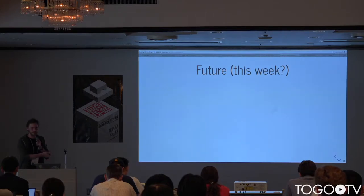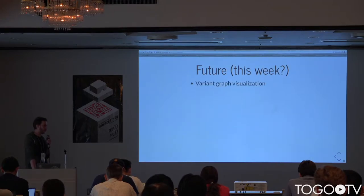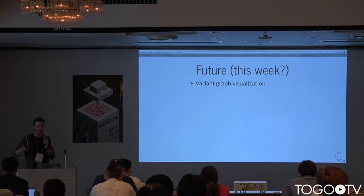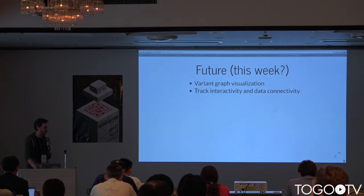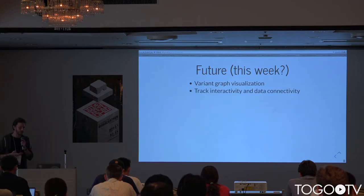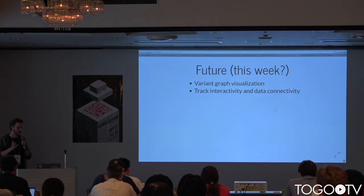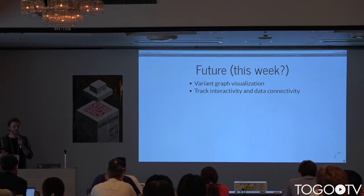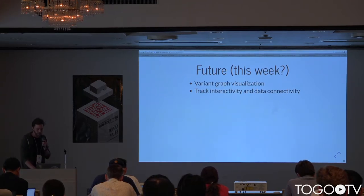Right now it's just that simple GOS track with the annotations, but one thing I really want to work on is adding an additional genome graph variant visualization track. I'm also possibly looking at working more on the track interactivity and data connectivity, because it would be very interesting to not only show a variant graph visualization, but also connecting it back to, for example, a GOS track. And that's what I had — thank you.